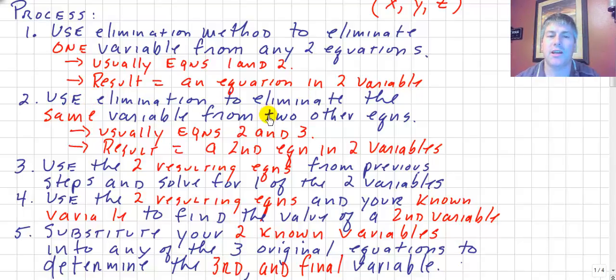Then, we'll use the elimination again, to eliminate the same variable from the other two equations. We have to eliminate the same variable in step one and in step two, but we have to use different equations. Usually, we'll use the second and third equations. You could use the first and third, but we'll usually use the second and third. The result will be a second equation in two variables, but those two variables, good news, will be the same two variables as we had in number one. So, now we have two new equations, both of those only in two variables.